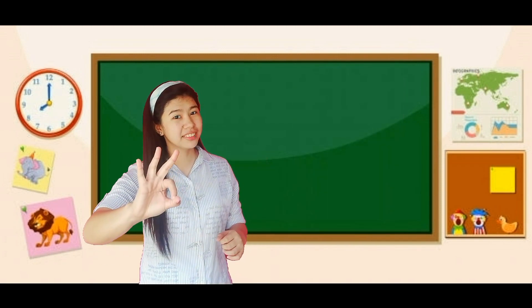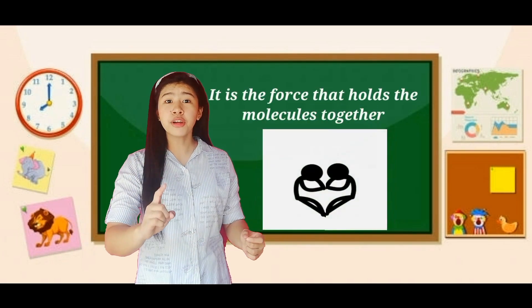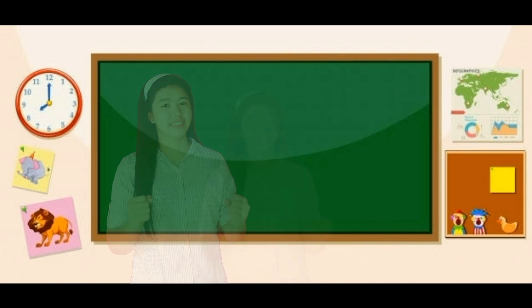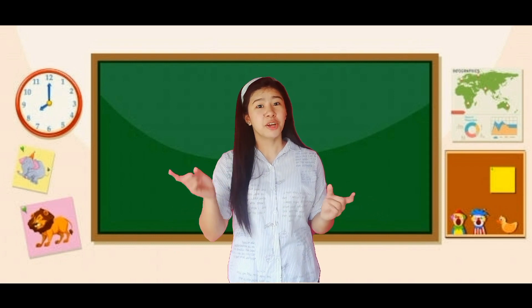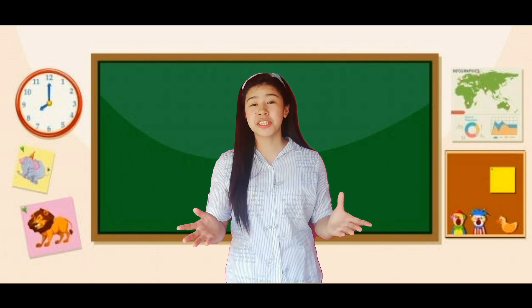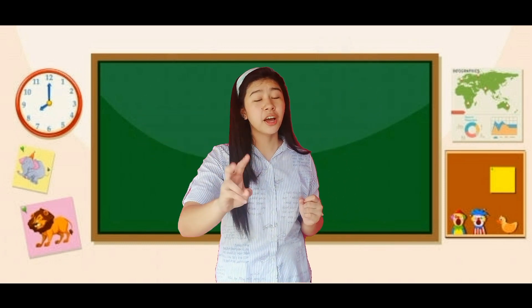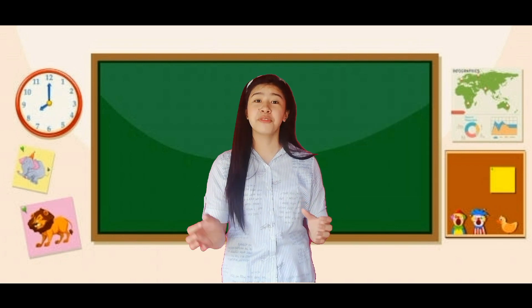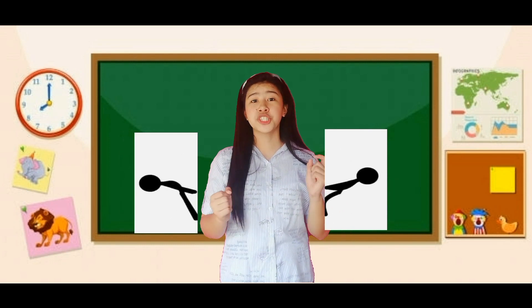For the third word: force of attraction. It is the force that holds the molecules together. Since you already know the three words, let us recall. First word — shapes, the regular and irregular shapes. Second word — volume, the amount of space that an object occupies. And for the third word — force of attraction, which keeps the molecules together.